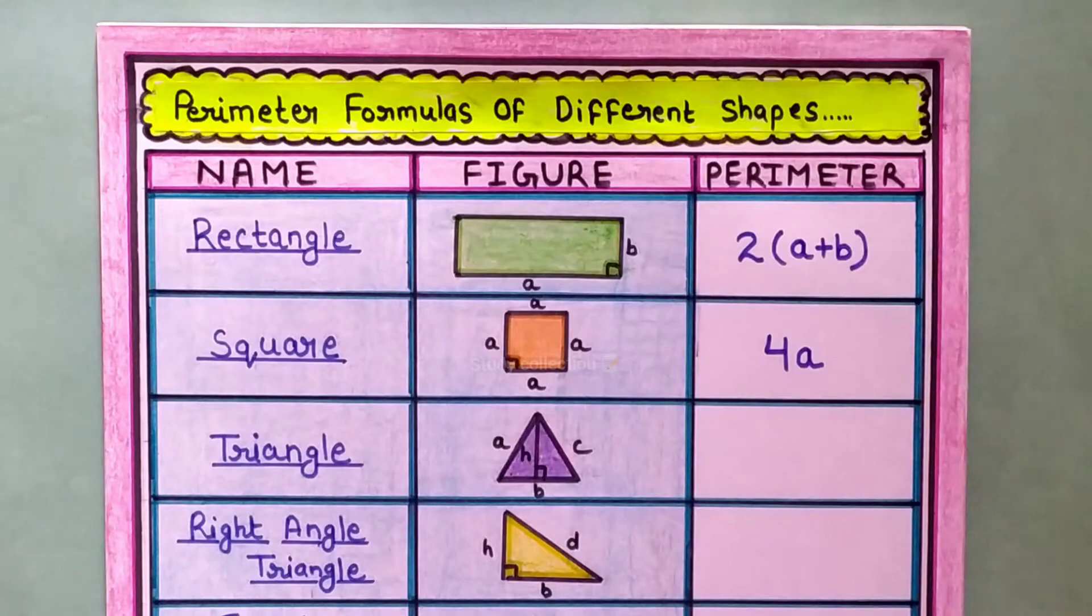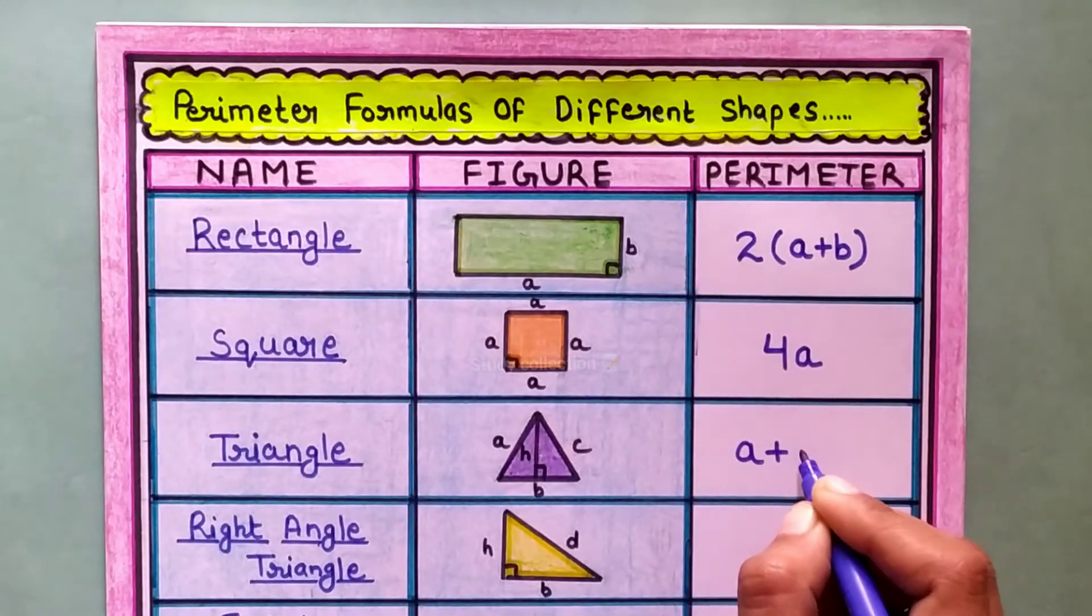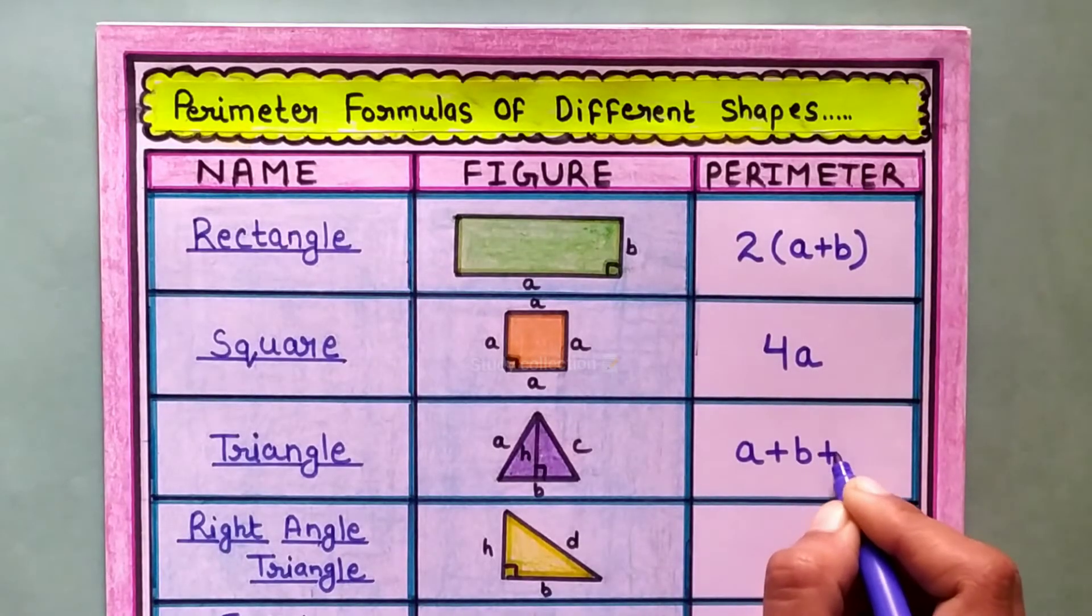Next shape is triangle. The perimeter formula of a triangle is A plus B plus C.